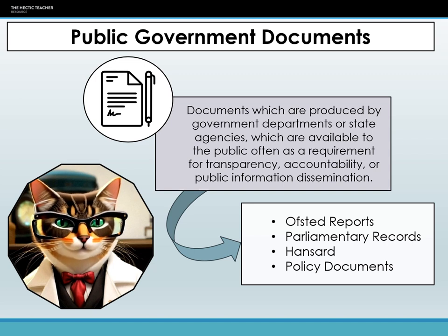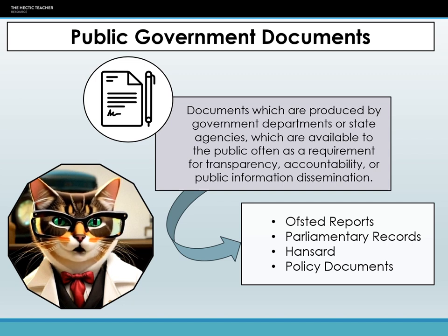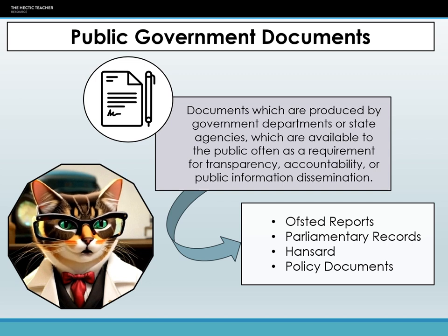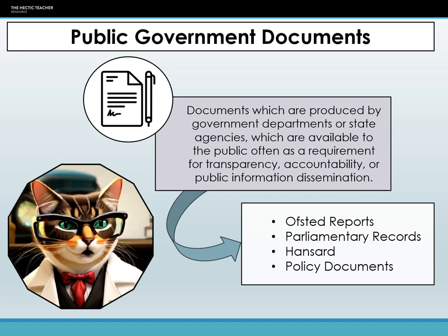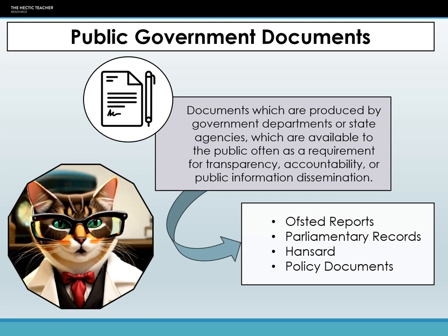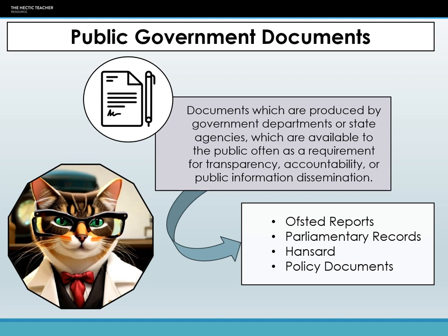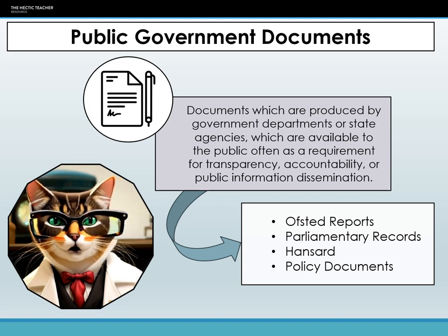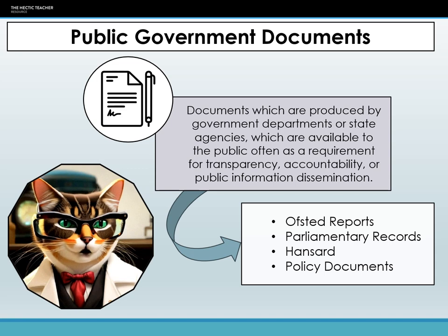However, alongside these strengths, there are inherent limitations. One of the principal concerns is the potential for bureaucratic bias. Government documents might, at times, reflect the priorities or biases of the ruling administration, which could influence the way data is presented or even collected. Additionally, while these documents offer vast amounts of data, they might not delve into the qualitative nuances or subjective experiences, which are often essential for sociological understanding. There is also the issue of potential gaps in data, as not every aspect of society will be documented. Lastly, interpreting these documents requires a certain level of expertise; sociologists must be adept at understanding the context in which the document was produced and be cautious of potential pitfalls in taking the data at face value.